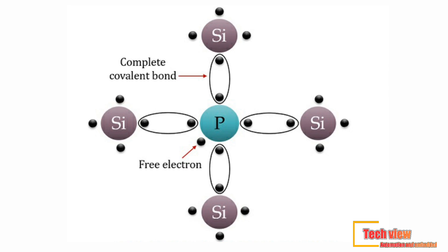Here, a pentavalent impurity — a phosphorus atom — is doped into a sample of intrinsic silicon. The phosphorus atom has five valence electrons; four of these form covalent bonds with four neighboring silicon atoms. The fifth electron has no chance of forming a covalent bond, which leads to the presence of an unbounded electron that is free to move into the conduction band.